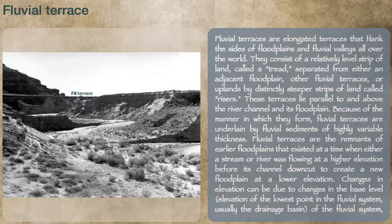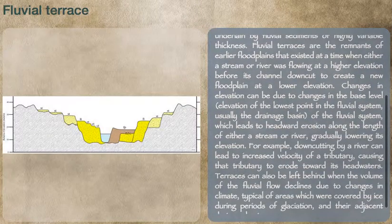Fluvial terraces are elongated terraces that flank the sides of floodplains and fluvial valleys all over the world. They consist of a relatively level strip of land, called a tread, separated from either an adjacent floodplain, other fluvial terraces, or uplands by distinctly steeper strips of land called risers. These terraces lie parallel to and above the river channel and its floodplain. Because of the manner in which they form, fluvial terraces are underlain by fluvial sediments of highly variable thickness.